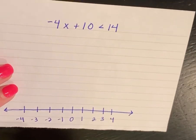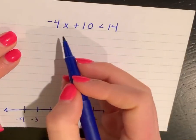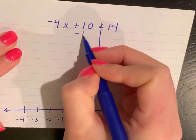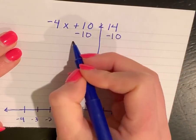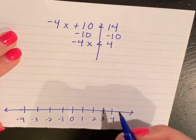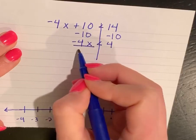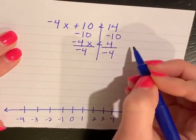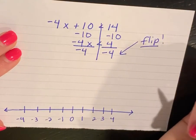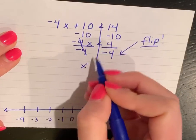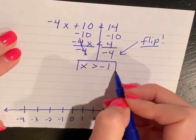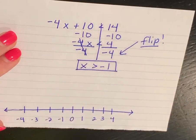The first equation we have is: negative 4x plus 10 is less than 14. I'm going to subtract 10 from both sides, so I'm left with negative 4x is less than 4. This is where I divide by a negative number, and we're going to flip our sign — because we're dividing by a negative — from less than to greater than. So my final answer is x is greater than negative 1.